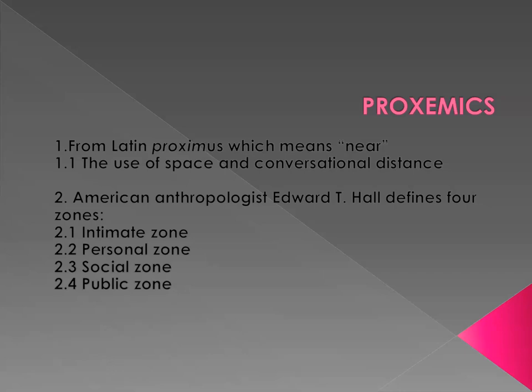The word proxemics originates from the Latin 'proximus,' which means near. Proxemics refers to the use of space and conversational distance in communication — in other words, the distances people maintain between each other in social interactions. Space varies with cultures, occasions, and factors like relationships and gender. The American anthropologist Edward T. Hall defines four zones: intimate zone, personal zone, social zone, and public zone.